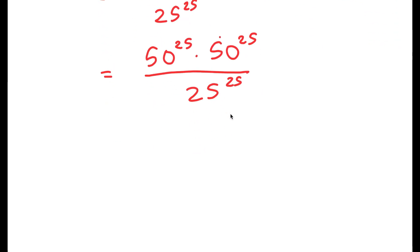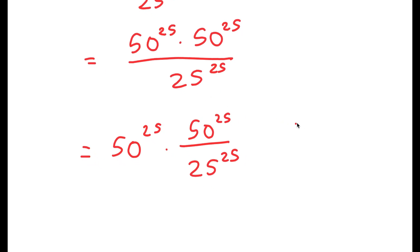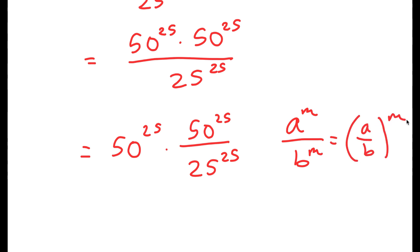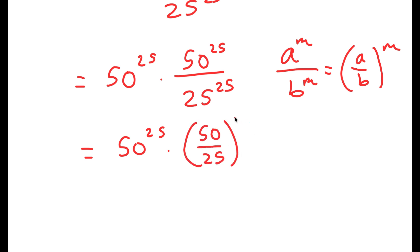From here, I'm going to rewrite this as 50 to the power of 25 times 50 to the power of 25 over 25 to the power of 25. Now I can use another property: a to the power of m over b to the power of m equals a over b to the power of m. So this becomes 50 to the power of 25 times 50 over 25 to the power of 25.